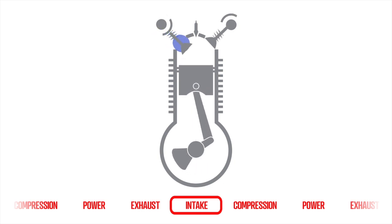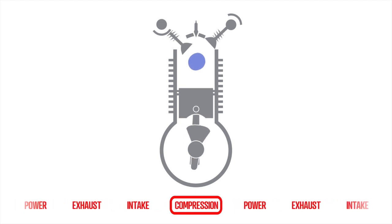In the intake cycle the fuel air mixture is drawn into the cylinder through the open intake valve. The compression cycle increases the pressure of the fuel air mixture as both valves close.